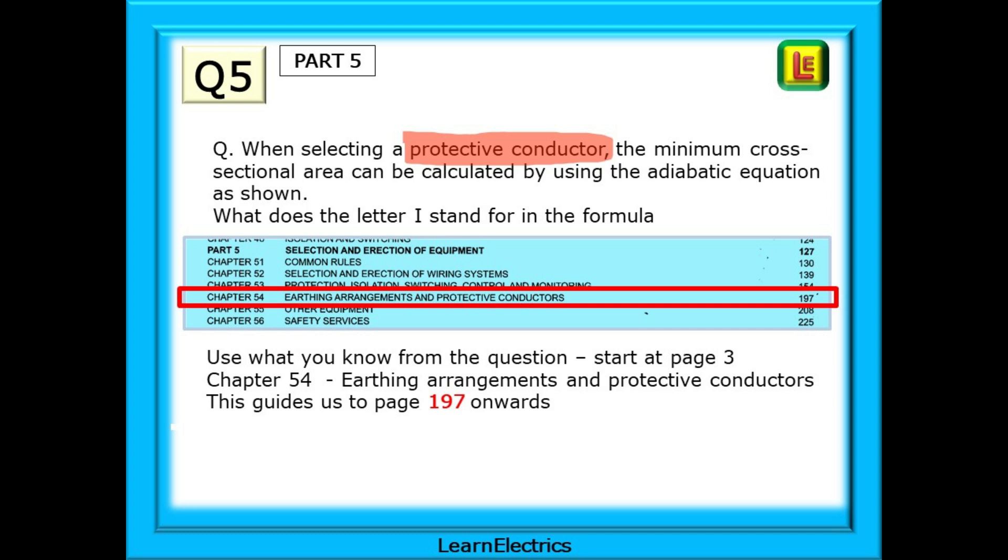Somewhere in the formula is a list that tells us what the letter I stands for in the formula. The key word to look for is protective conductor. Can we find this on page 3, the main contents page? Start on page 3.